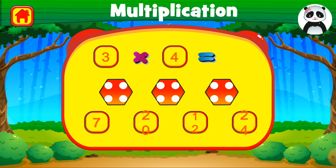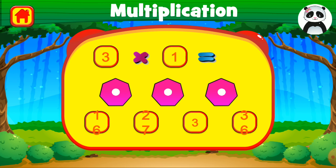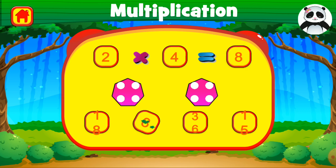3 times 4 equals 12. Right on. 3 times 1 equals 3. Fantastic. 2 times 4 equals 8. Brilliant.